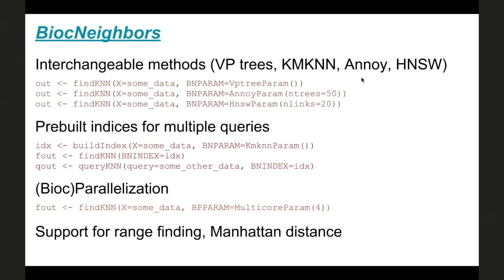The HNSW libraries are particularly fast being approximate libraries, and they work quite quickly for large data. For example, for one of the MNIST datasets — 700,000 points and 500 dimensions — I think it takes a minute with an HNSW param to search for the first 30 neighbors. That's quite snappy. Basically we have this interchangeable system that makes it very easy for both users and developers to incorporate a variety of nearest neighbor search algorithms into their packages.